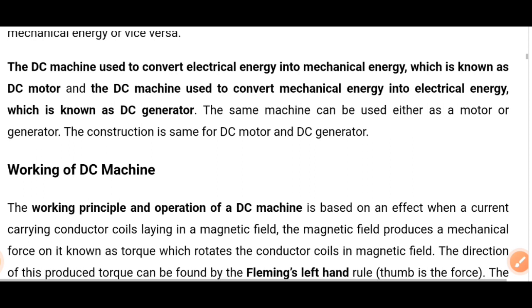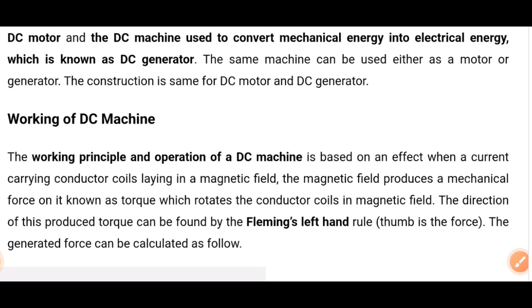Now coming to the working principle and operation of the DC machine. The working is based on an electromagnetic effect — when a current carrying conductor coil lies in a magnetic field, the magnetic field produces a mechanical force on it known as torque, which rotates the conductor coil in the magnetic field.